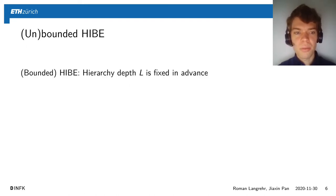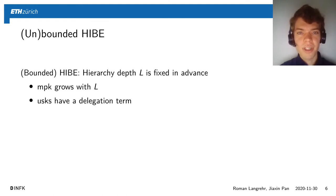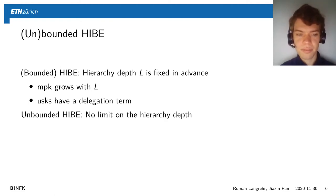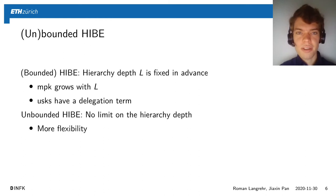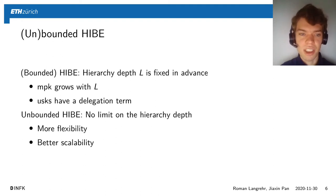Usually when you talk about HIBE you actually mean bounded HIBE, where the hierarchy depth is fixed in advance. This is usually necessary because the master public key grows with the hierarchy depth, or the user secret keys have delegation terms that grow with the number of remaining levels. Unbounded HIBE however has no limit on the hierarchy depth. This is better because it's more flexible — you don't have to fix the hierarchy depth in advance — and it also offers better scalability since you only need to pay for the levels you actually use.